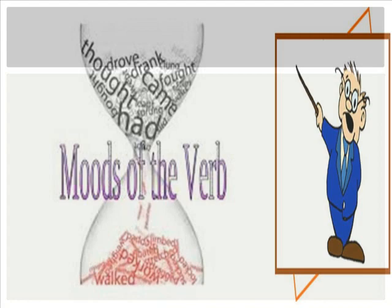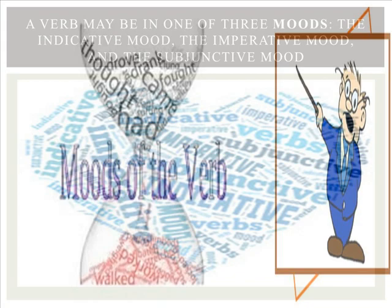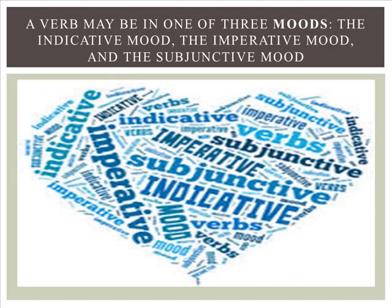Hello everyone. I'm here to present to you about moods of verb, which indicate a state of being or reality. A verb may be in one of three modes: the indicative mood, the imperative mood, and the subjunctive mood.